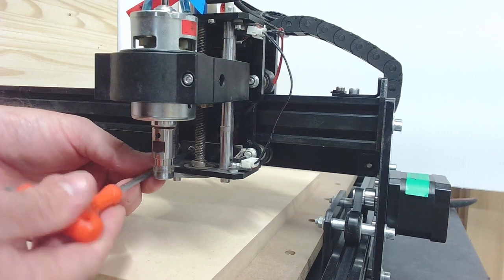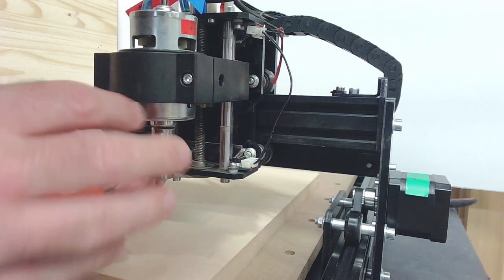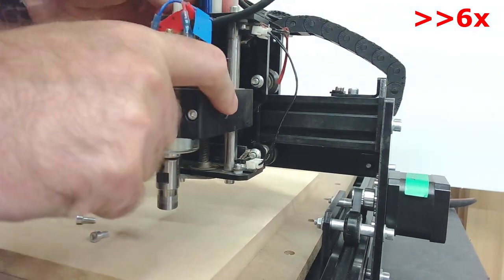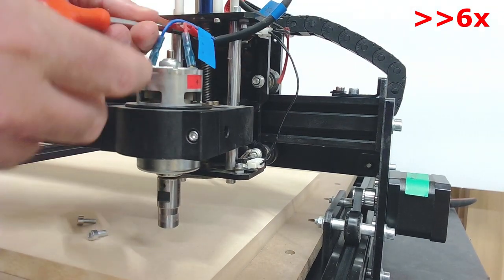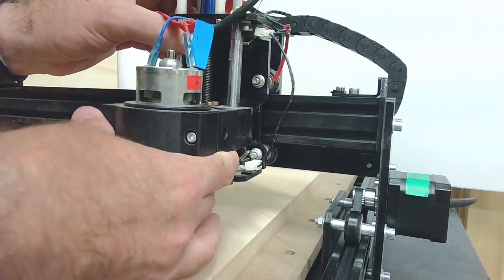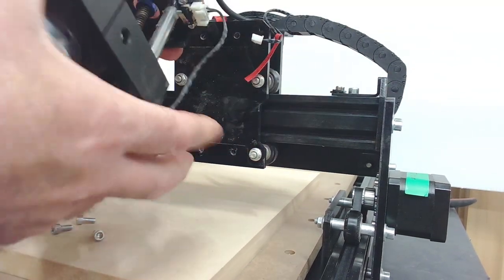I'm going to remove these screws here that hold the main Z-axis to the gantry. So with those four screws out, this chassis just comes off. I'm going to unplug all these connectors.